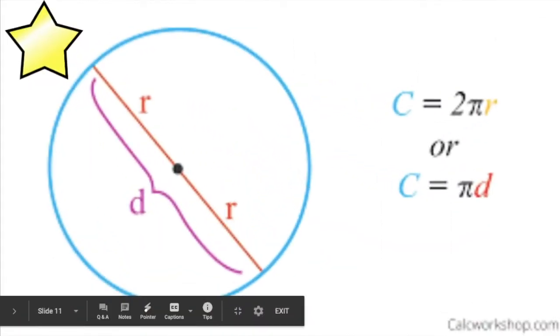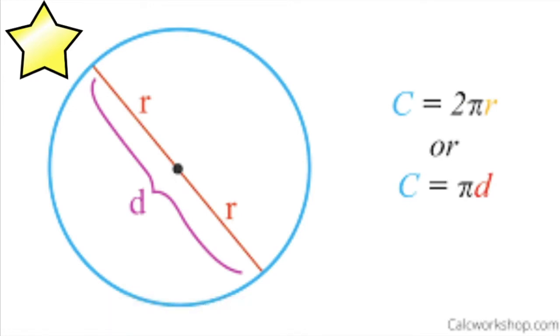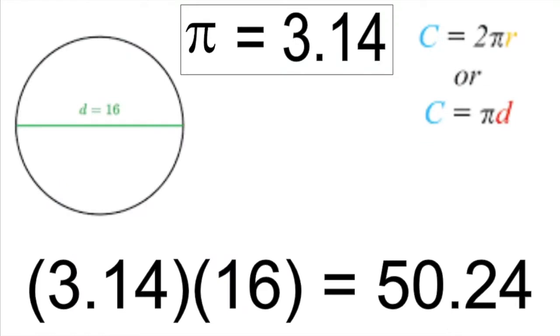So the important takeaway from today's lesson is that the circumference is pi times the diameter, and a diameter is just two radiuses. So we can use this formula if we take pi to be 3.14, and if you're given a diameter, you just multiply those two numbers together. So if my diameter is 16, 3.14 times 16 is 50 and 24 hundredths.